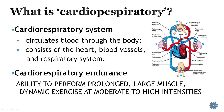The cardiorespiratory system circulates blood through the body and consists of the heart, blood vessels, and the respiratory system — your lungs. Cardiorespiratory endurance is the ability to perform prolonged large-muscle dynamic exercise at moderate to high intensities. It depends on the ability of your lungs to take in oxygen and expel carbon dioxide, and on the capacity of your heart and blood vessels to deliver oxygen to tissues and remove wastes.